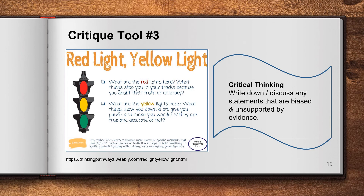Critique tool number three is red light, yellow light. This is when you're reading a text that is supposedly factual and you come across something you seriously doubt — you call it a red light. And if you come across something that is not quite so sketchy, you call it a yellow light. Make a note of these and cross-check that information, because you're thinking that the author may not be entirely objective.